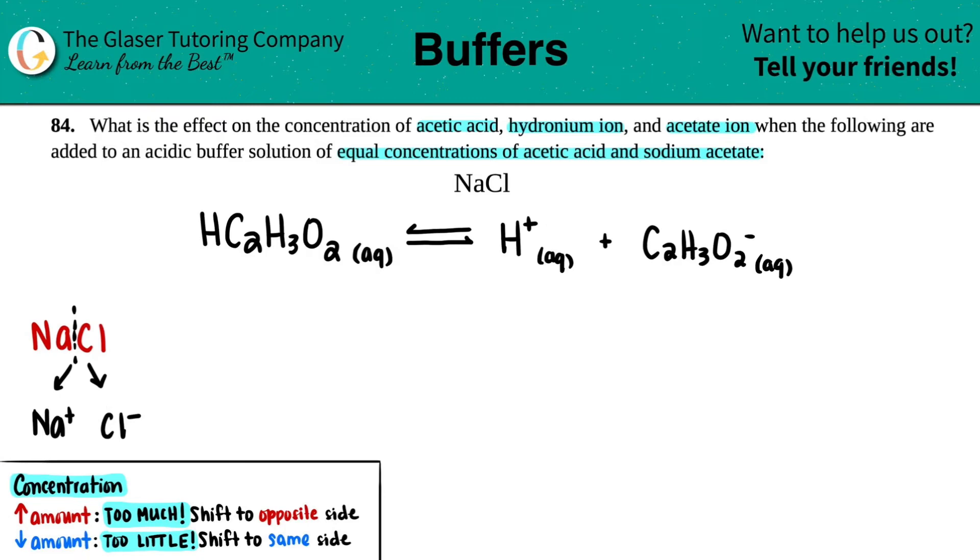Now remember that NaCl is a neutral salt, mainly because Na+ comes from NaOH. And since NaOH is a really strong base, the conjugate that we have, just the Na, is so weak that it's classified as neutral.